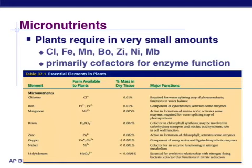Along with the main minerals, plants also require small amounts of what we call micronutrients. We call them micronutrients because they just need a really, really small amount — in some cases, 0.0001% of their total dry mass. Most of these are involved in enzyme function as cofactors, helping to promote the proper use and behavior of enzymes. They include chlorine, iron, magnesium, boron, zinc, nickel, and molybdenum.